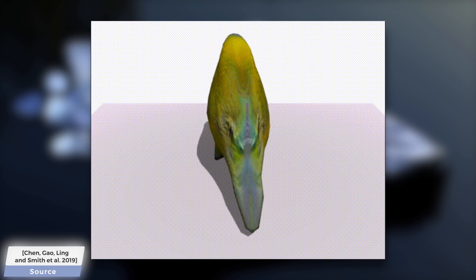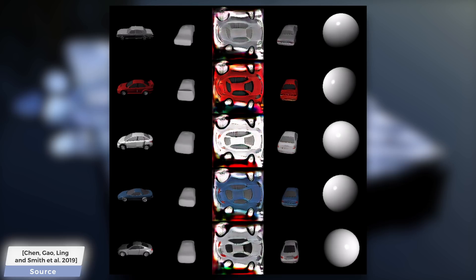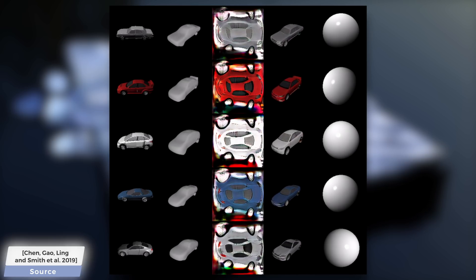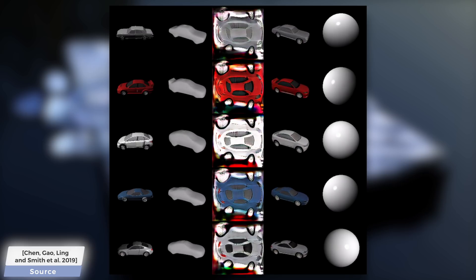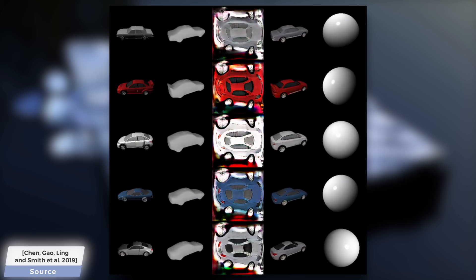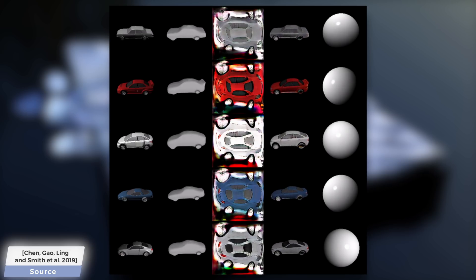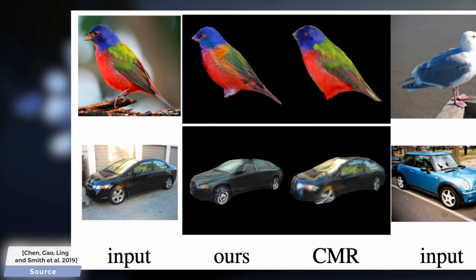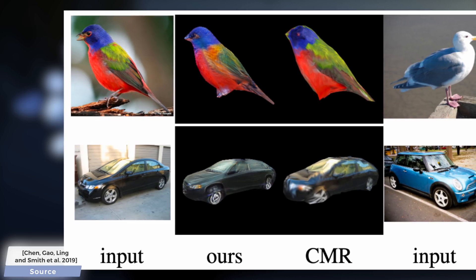Let's have a look at another example. Here, you see how it puts together the final car rendering in the first column from the individual elements like geometry, texture, and lighting. The other comparisons in the paper reveal that this technique is indeed a huge step up from previous works.